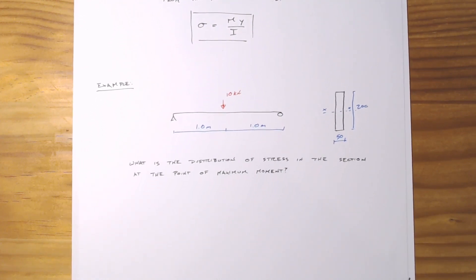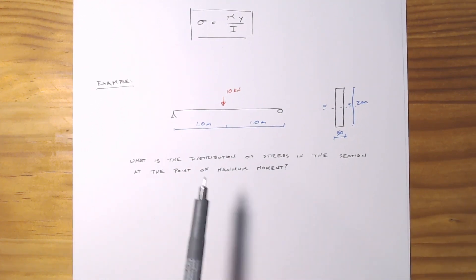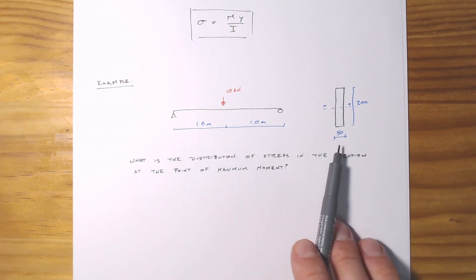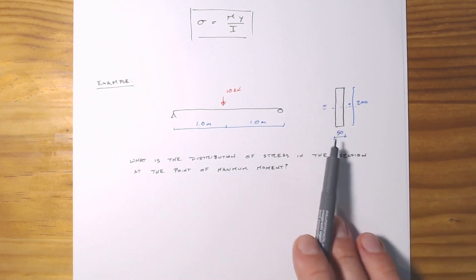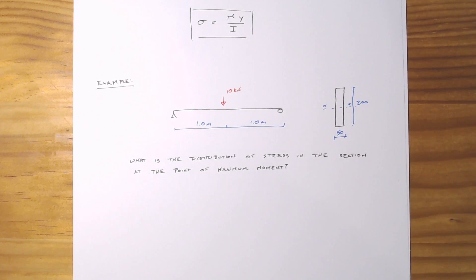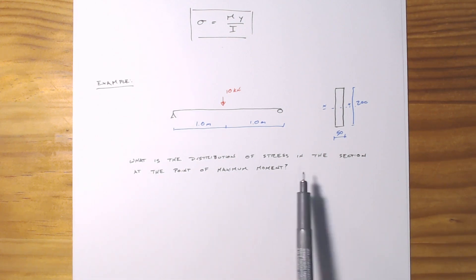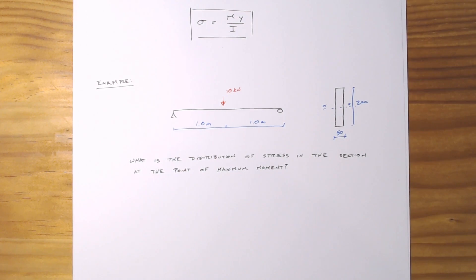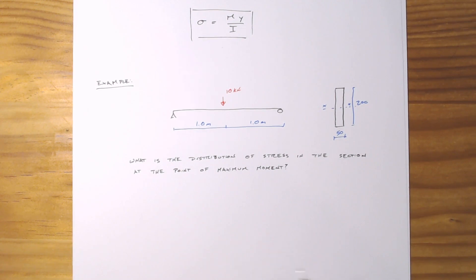The example I have here is just a small 2-meter-long simply supported beam. It has a rectangular cross-section: 50 millimeters wide, 200 millimeters deep, and has a single point load of 10 kilonewtons on it. What's being asked of us is to determine the distribution of stress across the section at the point of maximum moment. The first thing we need to do is find our maximum moment, and the first step in any problem like that is to draw a free body diagram.